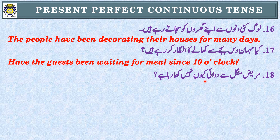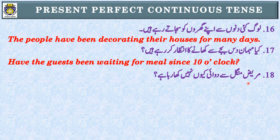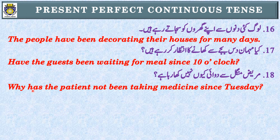Sentence 18: 'مریض منگل سے دوائی کیوں نہیں کھا رہا ہے؟' Identification: 'رہا ہے' اور 'منگل سے' — Present Perfect Continuous Tense۔ Subject: 'مریض' یعنی patient — singular — has been۔ یہاں WH word 'کیوں' یعنی why ہے۔ Why has the patient not been taking medicine since Tuesday?